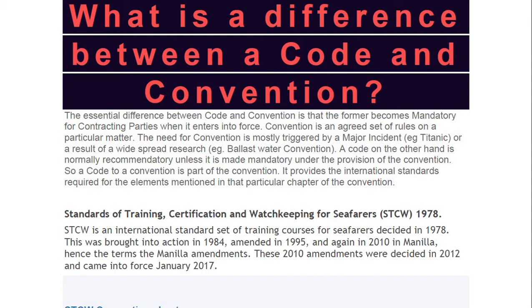A convention is an agreed set of rules on a particular matter. You can say that convention is a universal set and code is a subset to the convention — it is a branch of convention. The convention is mostly triggered by a major incident. For example, the SOLAS convention came into existence because of the Titanic incident.